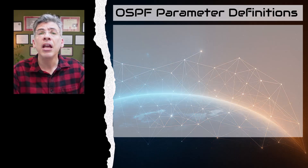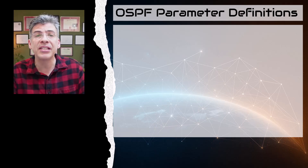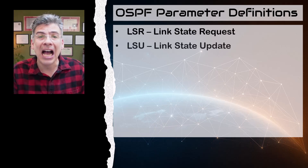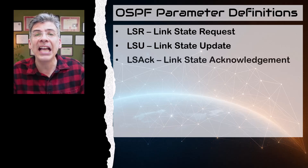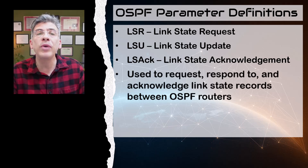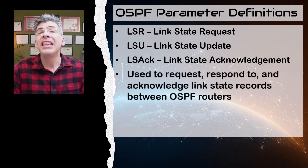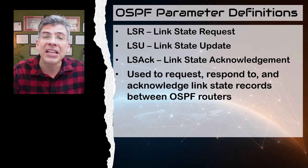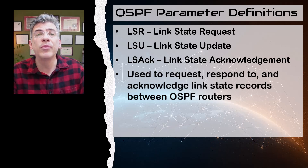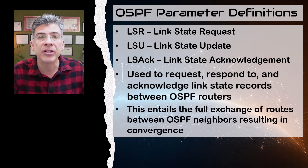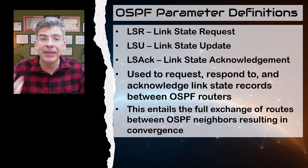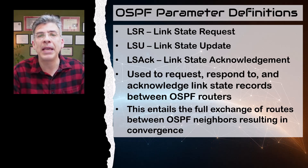And finally, for the purpose of understanding the neighbor discovery process, we have the link state requests, link state updates, and link state acknowledgment messages. These are messages used to exchange the link states, or essentially the networks known by each OSPF router. With the exchange of such messages, the result is the convergence of OSPF, meaning that OSPF neighbors obtain a full and complete map of the OSPF topology.